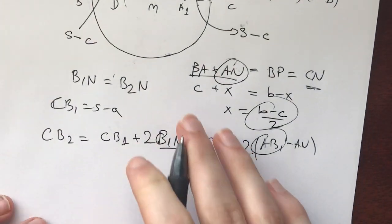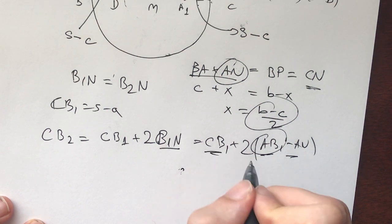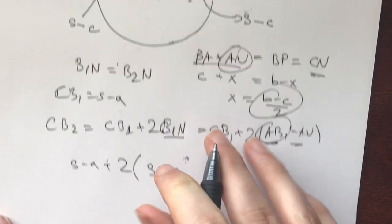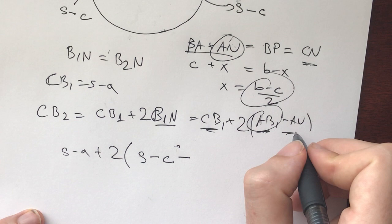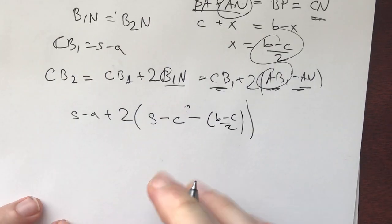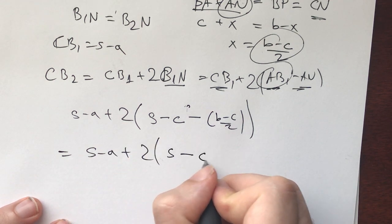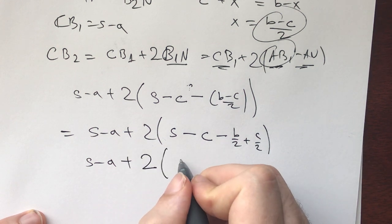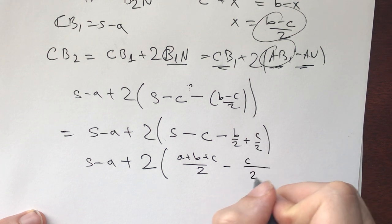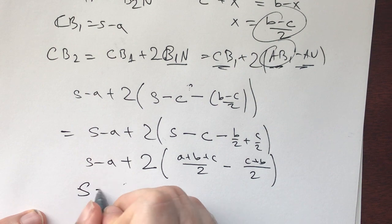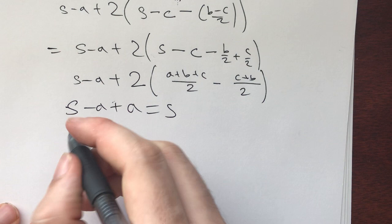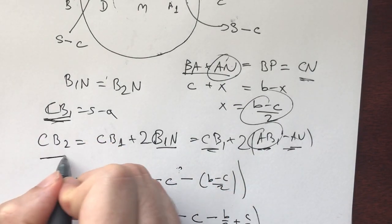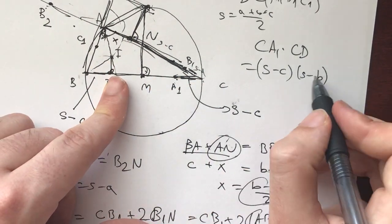We have CB1 equals s minus c, and CD equals s minus c minus AN where AN equals (b minus c)/2. Computing: CD equals s minus a plus 2(s minus c) minus (b minus c)/2 plus c/2, which simplifies to s minus a plus a, which equals s. So by the power of point C with respect to the circumcircle of A1B1C1: CA1 times CD equals CB1 times CB2, giving s(s minus a) equals (s minus b)(s minus c).